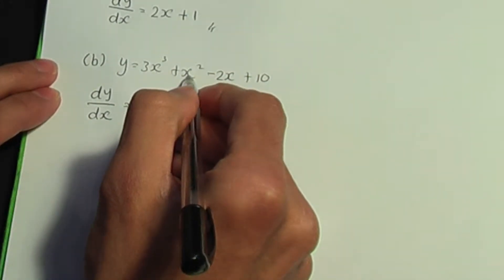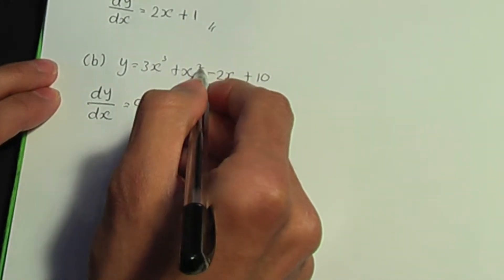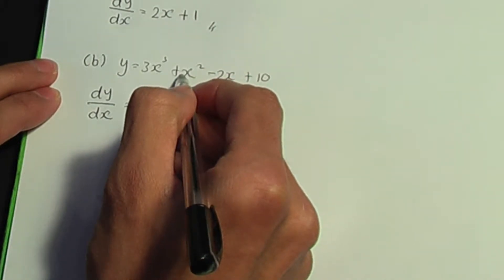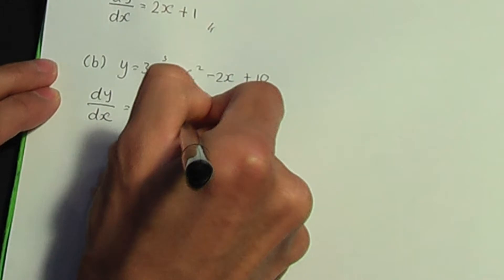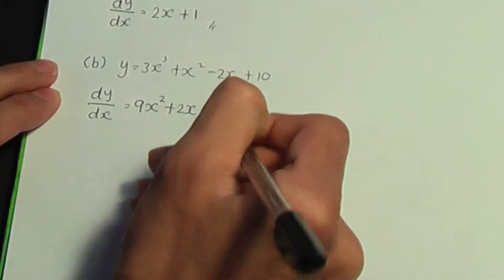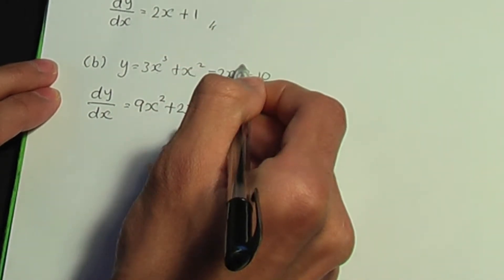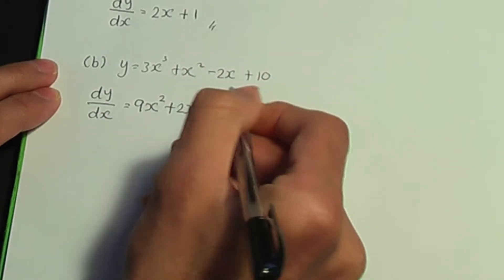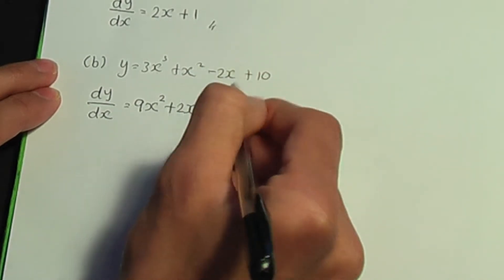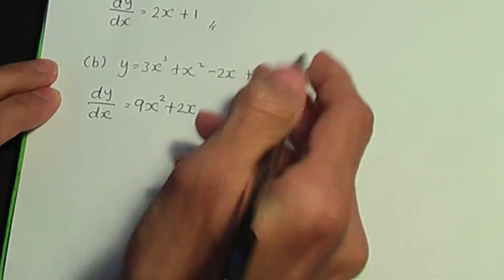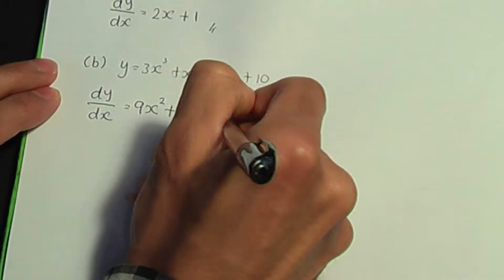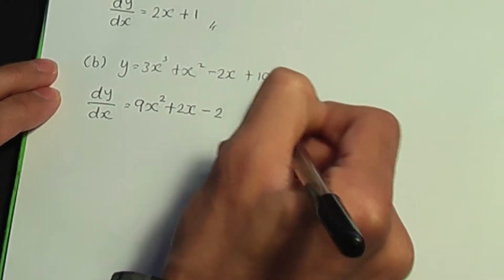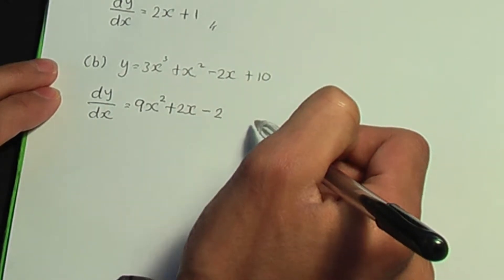For the second term, differentiate x squared: multiply by the power, 2 times the 1 in front is 2, so it's 2x. Then subtract 1 from the power: 2 minus 1 is 1. For the next term, minus 2x: differentiate minus 2x, the answer is minus 2. And differentiating the constant plus 10, the answer is 0.